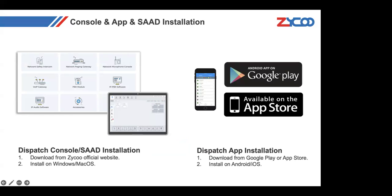Next is the installation method for the operating software. The first one is the Dispatch Console and ICAD tool — they both support Windows and Mac OS. You can go to the Zyco official website and find the installation file on the download page, then download and install it like any ordinary software. The second one is the mobile application, our IP audio dispatch app, which you can find on both Google Play or the Apple Store and download very easily.